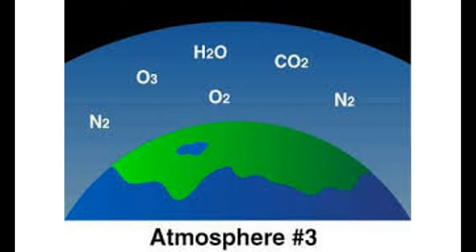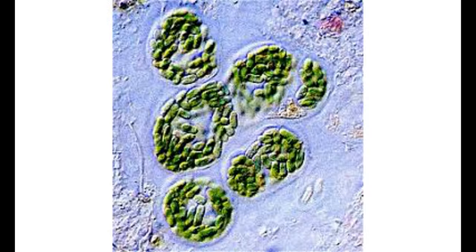Initially, reproduction occurs by replication with no change in genetic code. To adapt to variable environmental conditions, organisms can only rely on mutation for genetic change. Thought to be the first living organisms, prokaryotes are without nuclei and remain unicellular. Cells gather as colonies and become increasingly specialized as they do so, setting the stage for the formation of multicellular organisms.